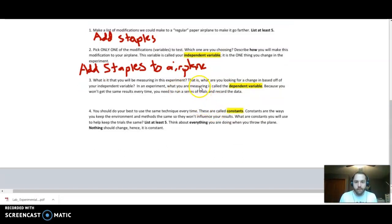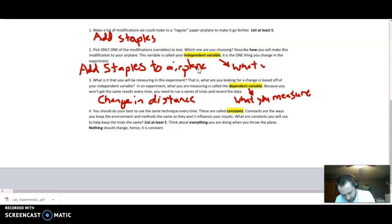That is the thing that I am going to change from one of my planes to the next. Next, what is it that I will be measuring in this experiment? That is, what are you looking for a change in? Based on this independent variable, what am I looking to see if it changed? In this case, since we're going to be checking for changes in distance, we're going to be looking for a change in distance. Whatever you are measuring, and that's a lot of times how I will simplify this, students, what you measure in any experiment is called your dependent variable because it's dependent on this one. If I were to simplify an independent variable, it is what you change.